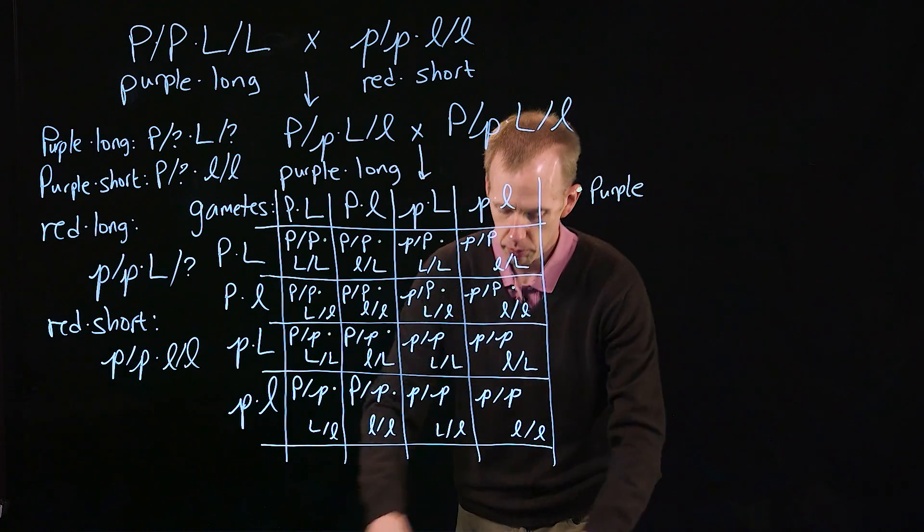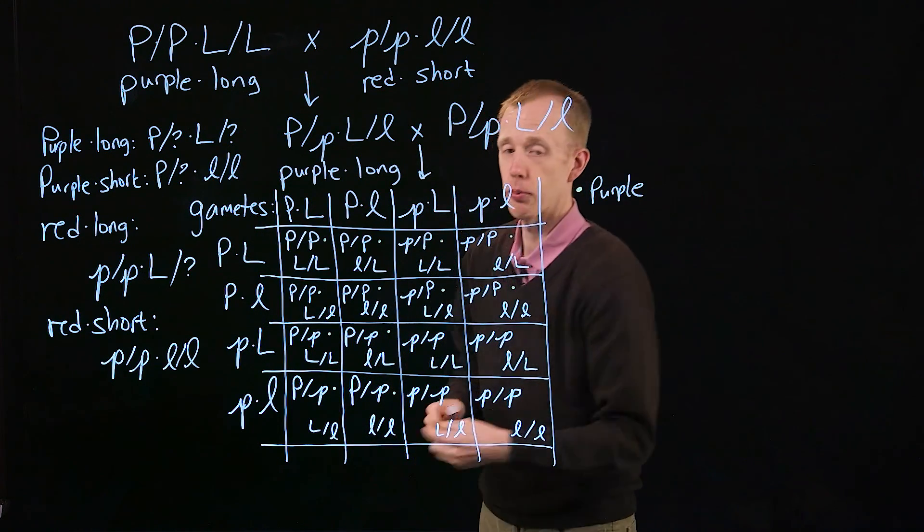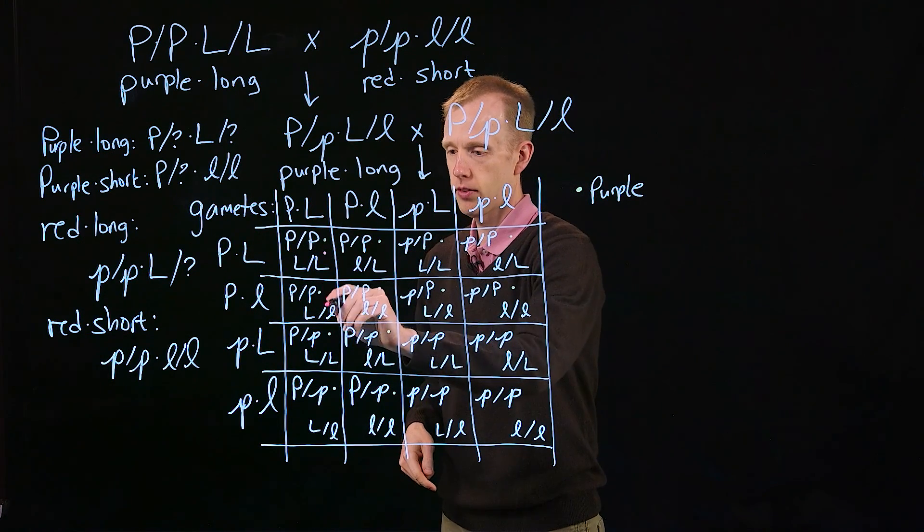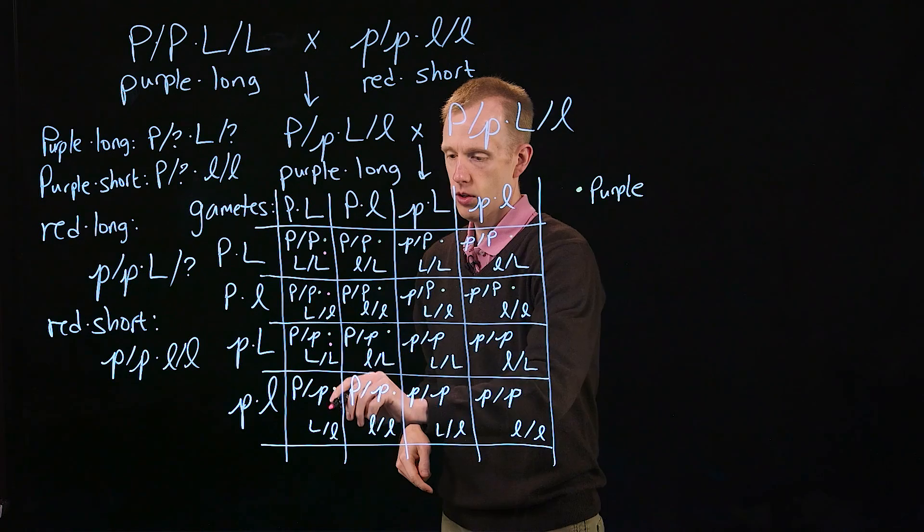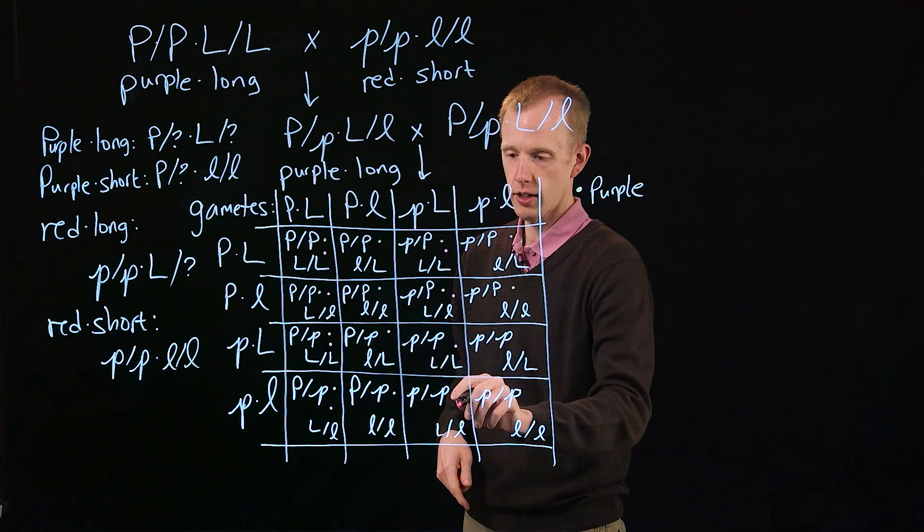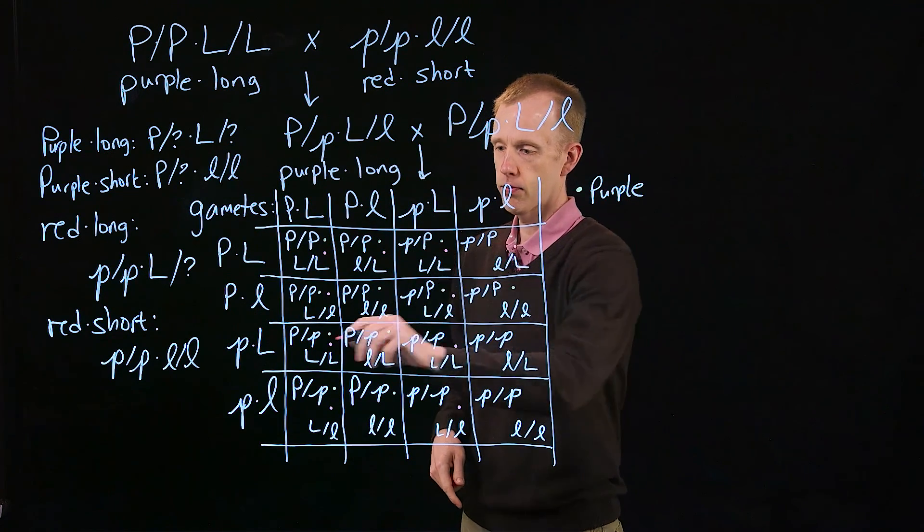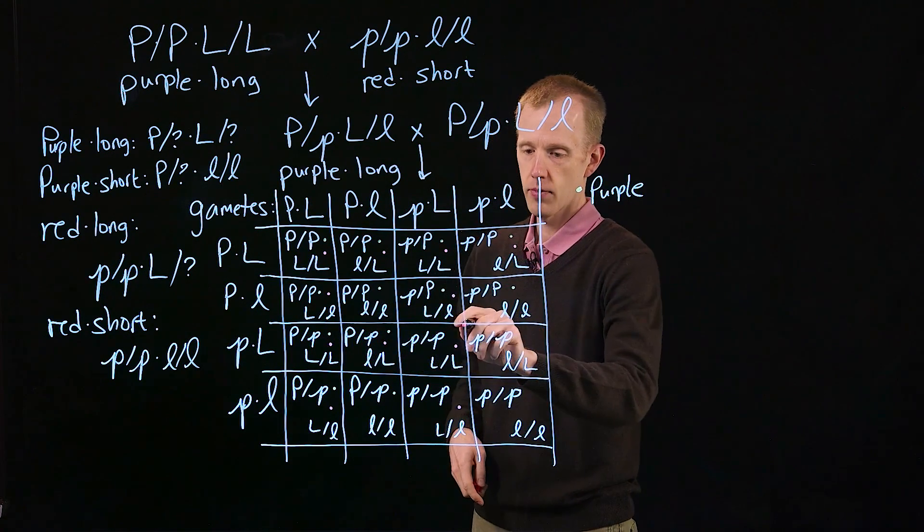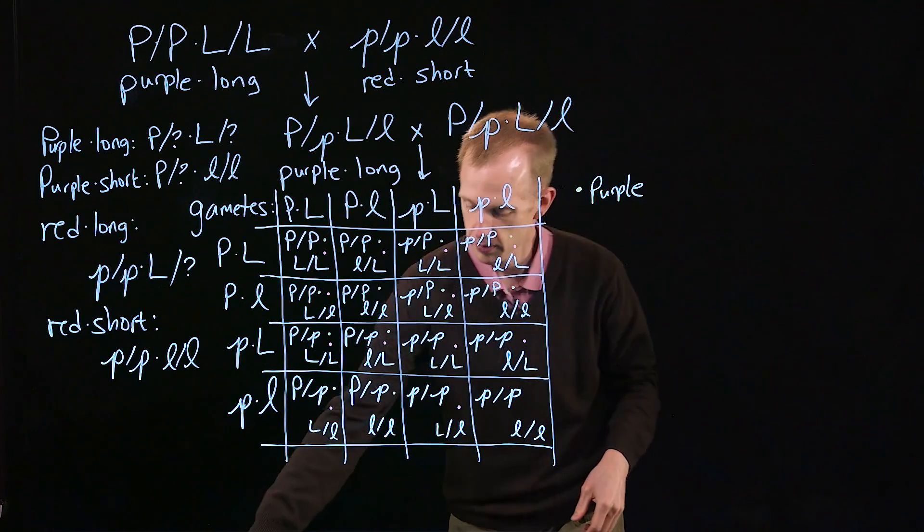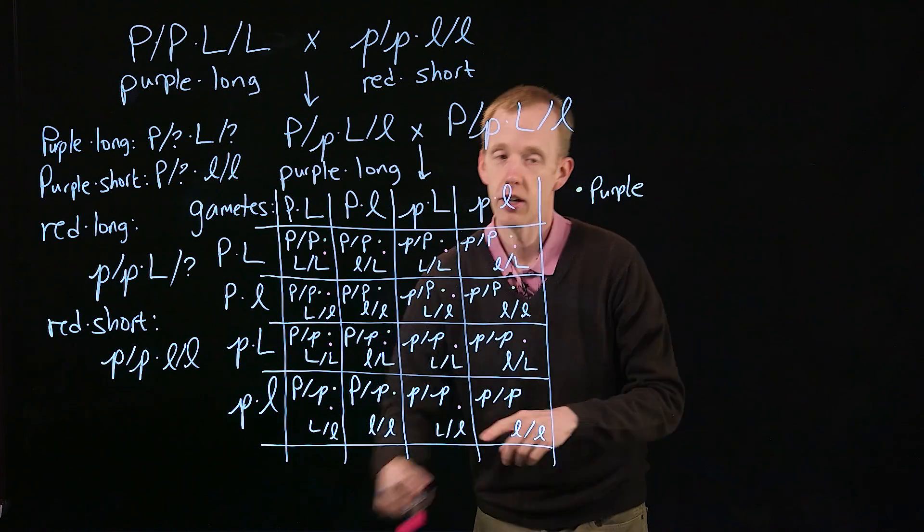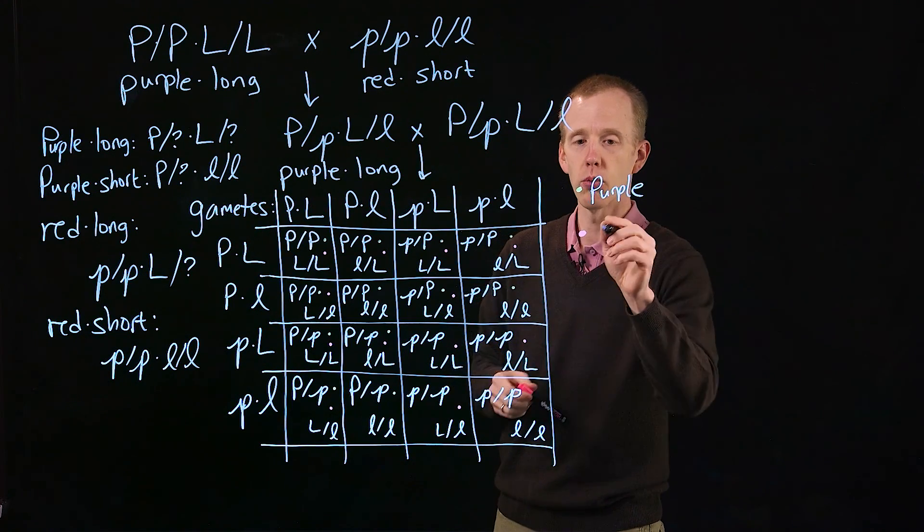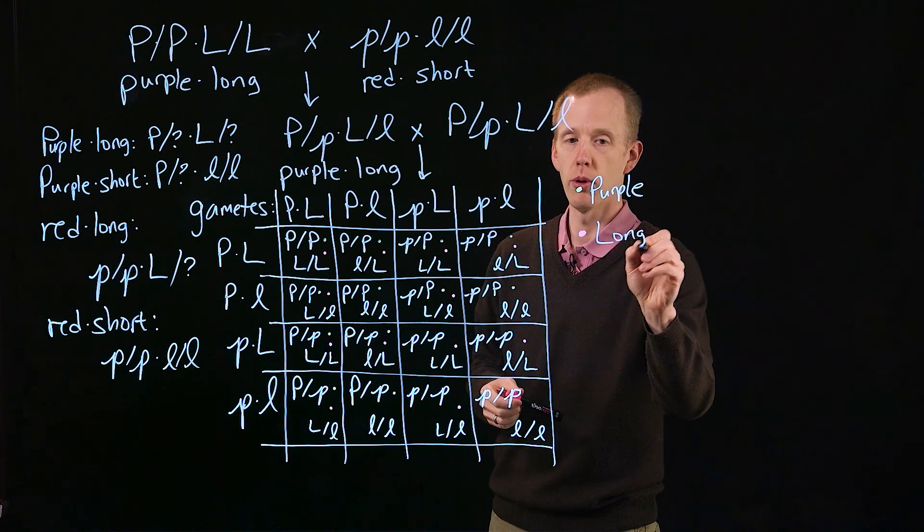You could look separately at what happens when you have a capital L. Every column and every row that had a capital L will have a capital L in the genotype. So again, we find that there are nine of these squares that have long pollen. Some of those will have both the purple and the long.